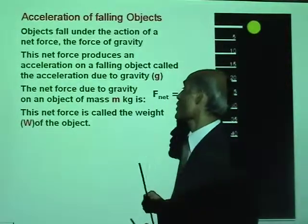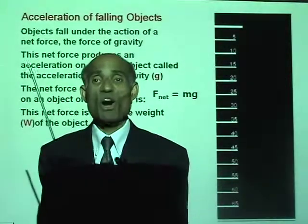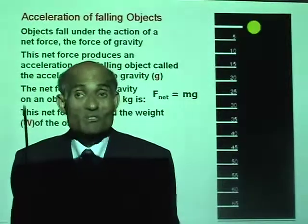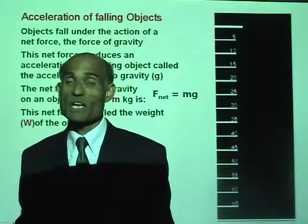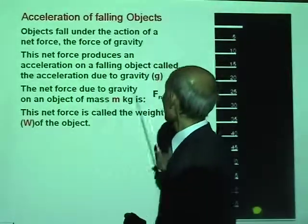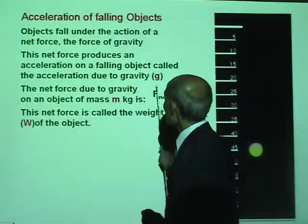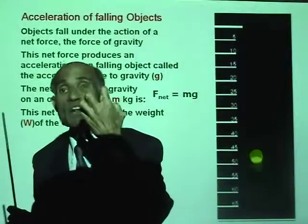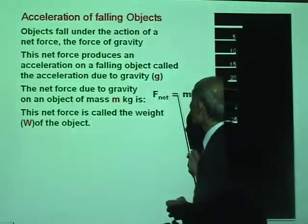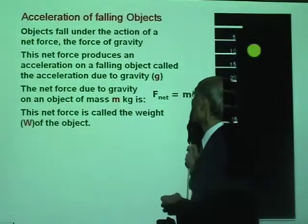This net force is called the weight of the object. The term weight is very often misunderstood, even by science students. Weight is not the same as mass. A weight is not measured in kilograms — a weight is a force. The net force that makes an object fall is called its weight. So F net equals mg is the weight of the object.